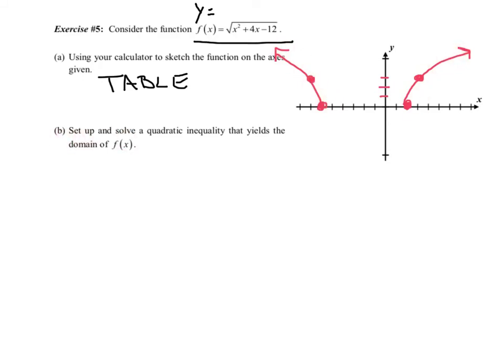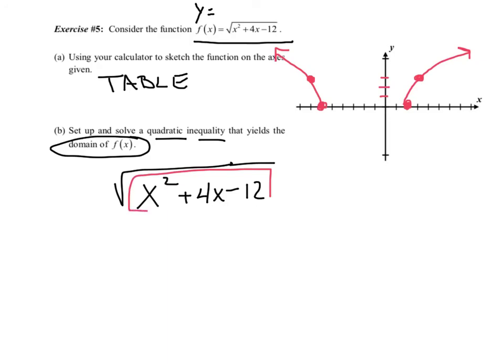Part B: Set up and solve a quadratic inequality that yields the domain of f(x). Now, that might sound confusing, but it's pretty simple. So, I'm going to take, remember I have that square root of x squared plus 4x minus 12, and the domain just describes the x values. And we just said a couple slides ago that whatever you have under here has to be positive. And the way we represent positive is to say that that junk under there is greater than or equal to 0. Now, remember, you can equal 0 because 0 is not negative. So, greater than or equal to 0.